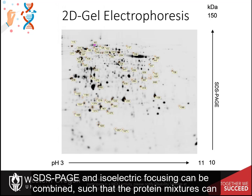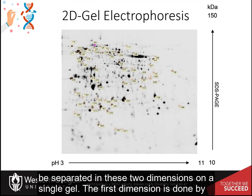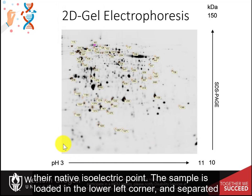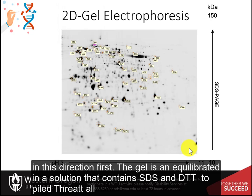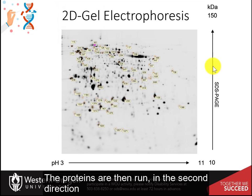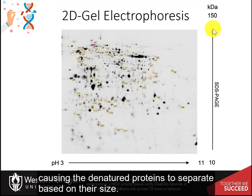SDS-PAGE and isoelectric focusing can be combined such that protein mixtures are separated in two dimensions on a single gel. The first dimension is done by isoelectric focusing, where proteins are maintained in their native shape and display their native isoelectric point. The sample is loaded in the lower left corner and separated in this direction first. The gel is then equilibrated in a solution containing SDS and dithiothreitol to cause protein denaturation, and the proteins are then run in the second direction, separating denatured proteins based on their size.